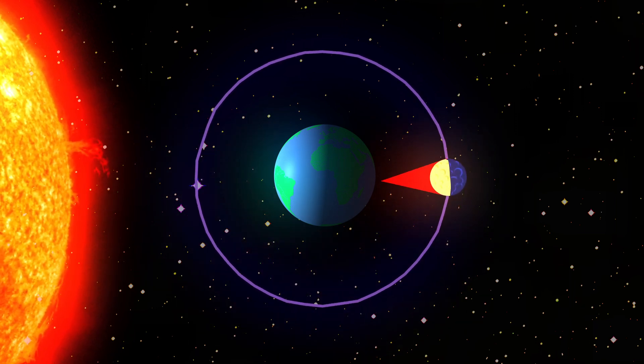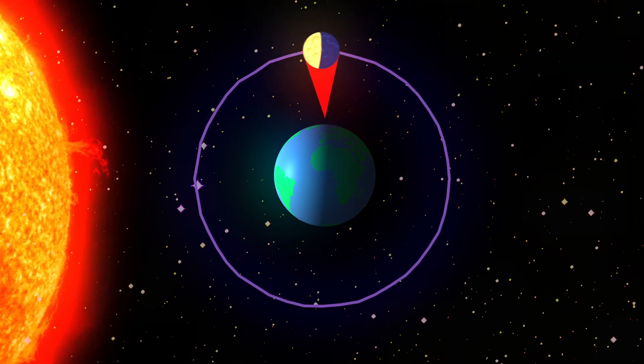But when the moon's over there, the part facing away from us becomes the dark side. This synchronous rotation is also why we only see one side of the moon.